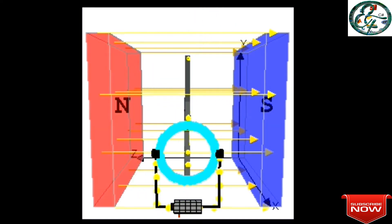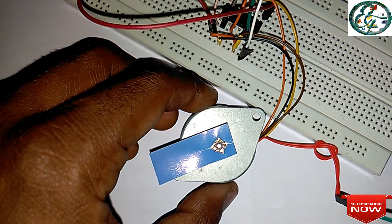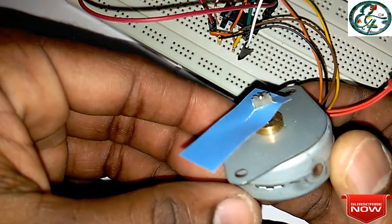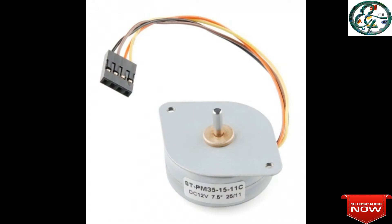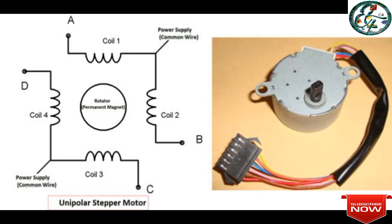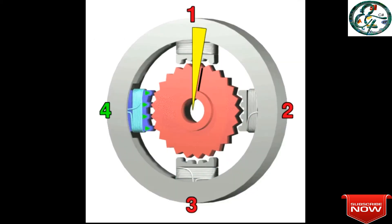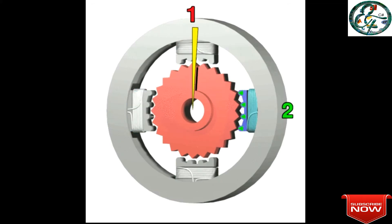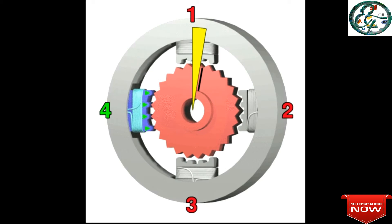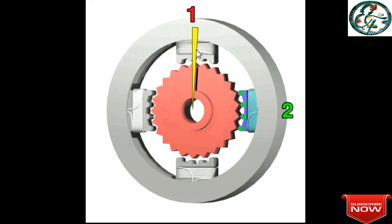We can also use a stepper motor. Unlike the DC motor, the stepper motor uses normal rotation differently. In a stepper motor, the rotor side has a gear. Let's see the internal diagram — the rotor has gear teeth.